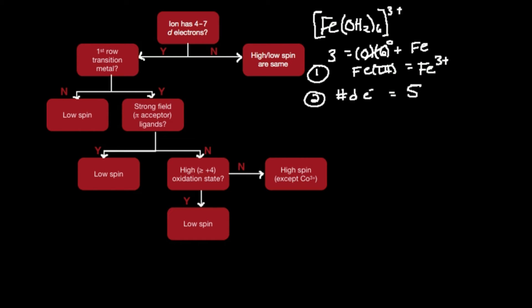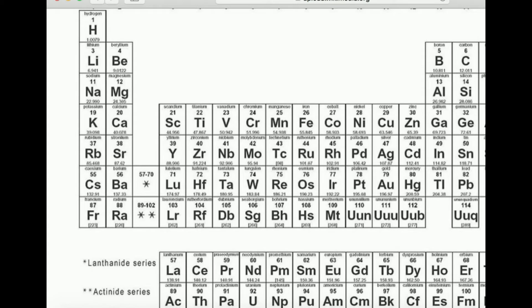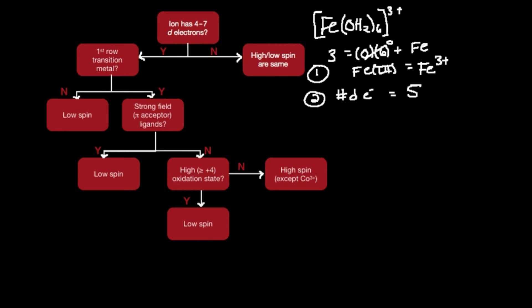All right, so we go to this flowchart now. Does the ion, in this case iron, have four to seven d electrons? Yes. Generally for the ones they're going to give you on the test, the answer will always be yes. The reason no is not really the answer is because nothing really interesting happens. But yes is the answer to this because five falls between four and seven. So then we need to ask, is iron a first row transition metal? Well, yeah it is. It's in the first row of transition metal. So the answer to that is yes.